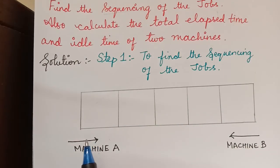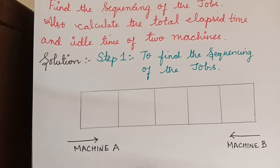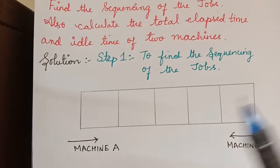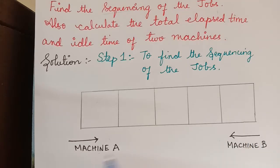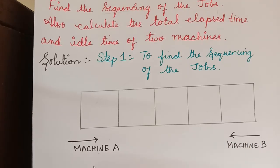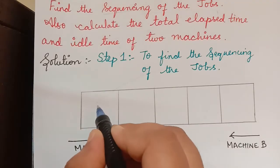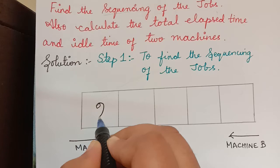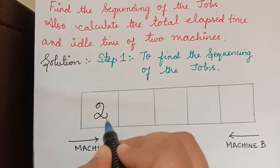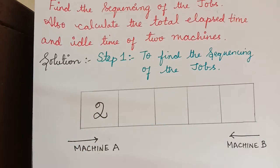If the least value corresponds to machine A, we write from left to right. If it corresponds to machine B, we write from right to left. The job we got is job 2, and since the least value was from machine A, that job has to be performed first. So job 2 is written first from the left.